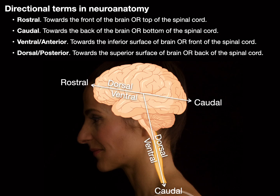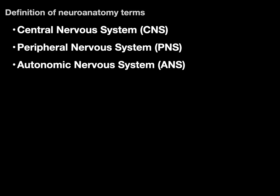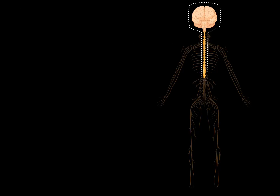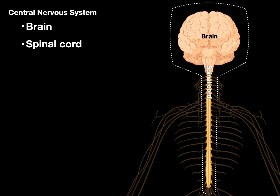So those are some directional terms in neuroanatomy that may be helpful. Now here are some other neuroanatomy term definitions. CNS stands for central nervous system. It consists of the brain and the spinal cord — this is the processing center. It takes sensory input and produces motor output. The brain also contains higher-order cognitive centers for thinking, emotions, and such.